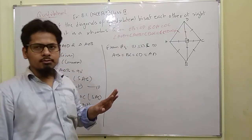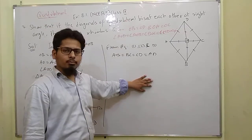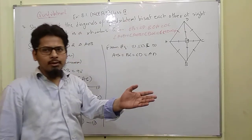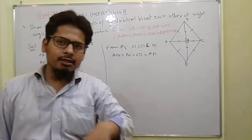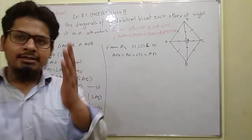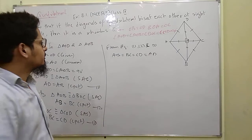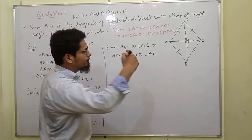So now we can see it is a rhombus, because all sides are equal and the diagonals bisect each other. Now we have a chance to do a parallel proof.